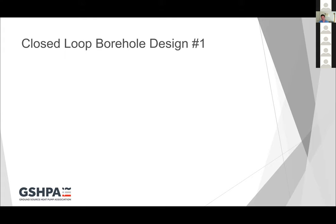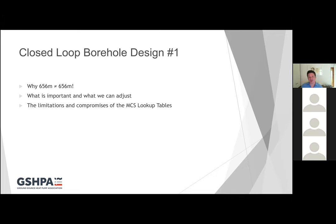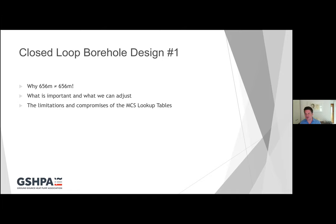So without further ado, I'll talk you through what I'm going to cover. The subtitle is why 656 does not equal 656 metres. I'll then go on to talk about what's important in borehole design and what we can adjust — the parameters we've got to play with. Most of what I'll cover today is also applicable to horizontal trenches and, in some aspects, other system types like open loop. Finally, I'll talk about the limitations and compromises associated with the MCS lookup tables — it's very important for everybody who uses those tables to understand where they came from and what their limitations are.